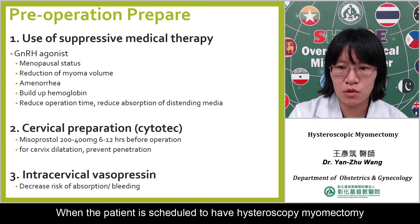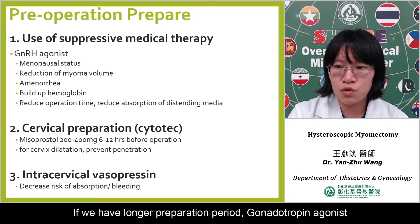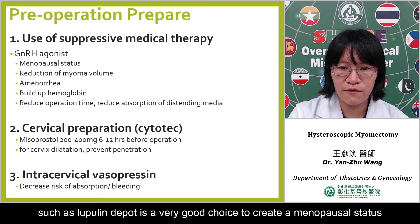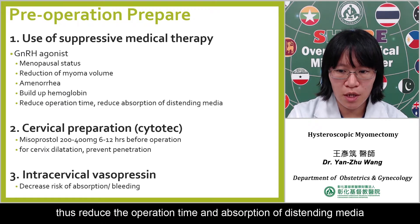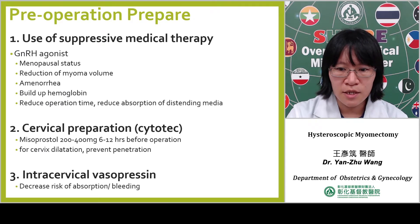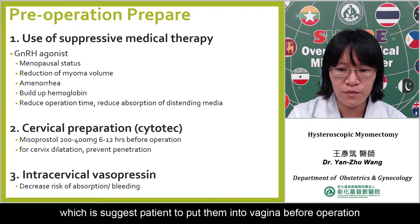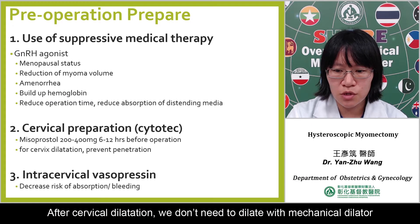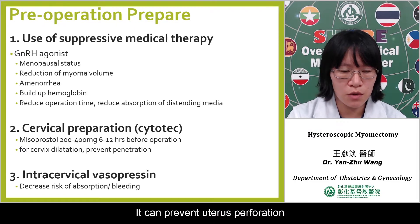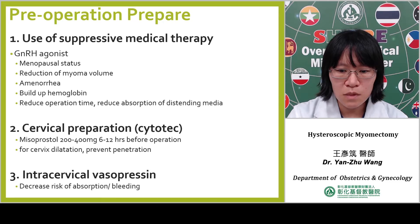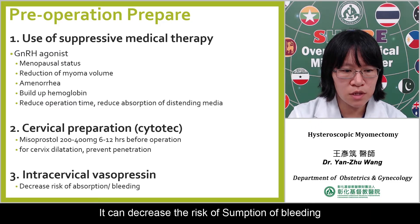When the patient is scheduled to have hysteroscopic myomectomy, there are some preparations we can do. If we have a longer preparation period, GnRH agonist such as leuprolide depot is a very good choice to create a menopausal status — it might reduce the tumor size, reduce the operation time, and reduce the absorption of distension media. Cytotec is a very good medication for cervical dilatation — suggest patients put it into the vagina before operation. After cervical dilatation, we don't need to dilate with a mechanical dilator and insertion of the hysteroscope would be easier, which can prevent uterine perforation. Some doctors also perform intracervical injection of vasopressin to decrease the risk of absorption or bleeding.